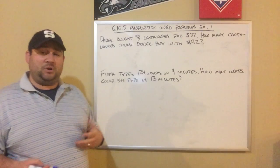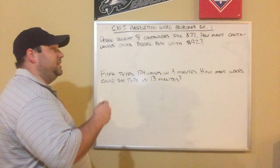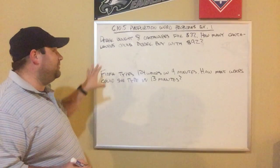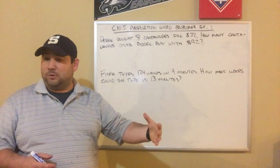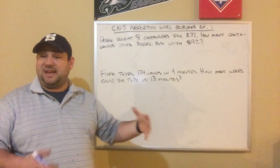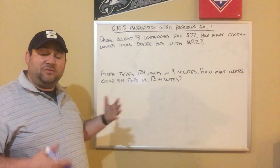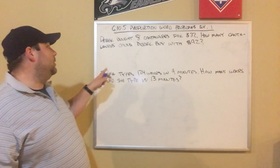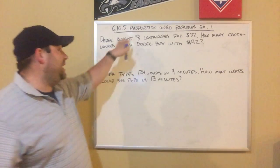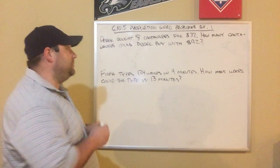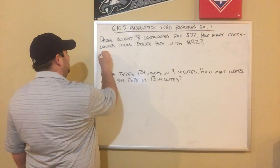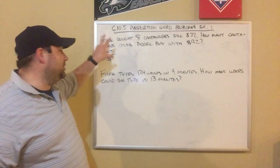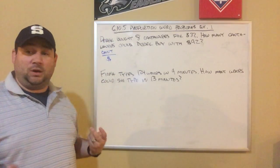We're going to set up a proportion, and the most important thing when you set up a proportion is that you are consistent. Whatever you put on top of the proportion needs to be the same in both fractions, and whatever's on the bottom needs to be the same. We have two different things we're talking about: cantaloupes or money. I'm going to make a decision — cantaloupes on top and money on the bottom. It doesn't matter; you could switch that around and it would still work.